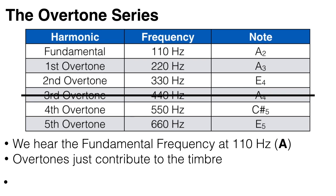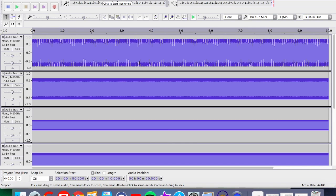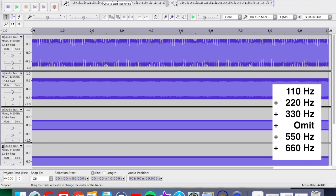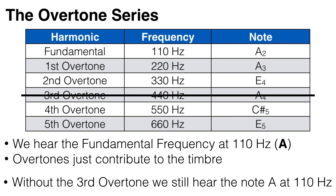But if we were missing the third overtone at 440 Hz, we would still hear the note A at 110 Hz — it would just have a slightly different timbre. In fact, there could be numerous silent harmonics, but we would still hear the note A at its fundamental frequency of 110 Hz.